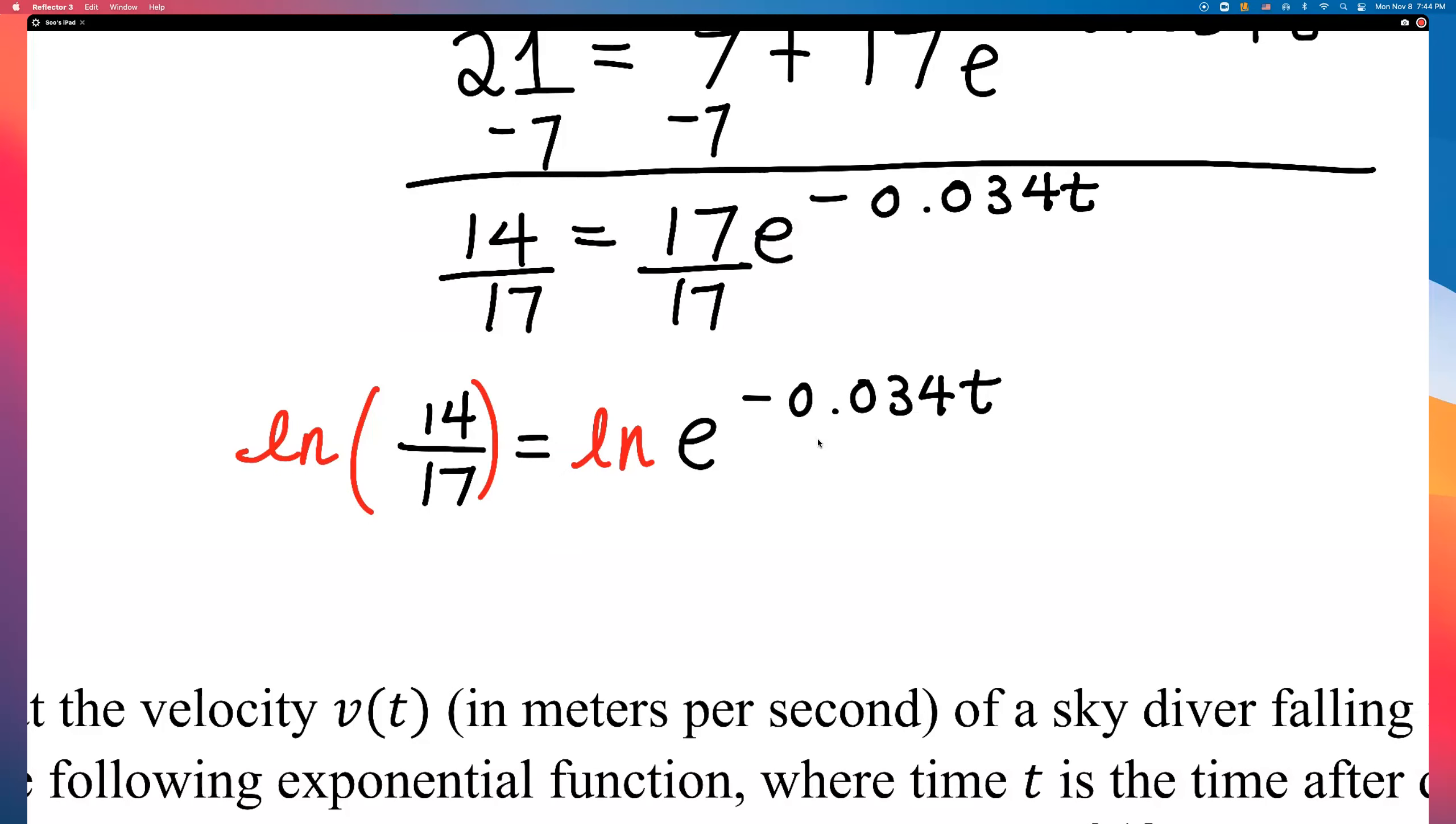Okay. Natural log of both sides. So, the left-hand side is simply natural log of 14 over 17. And the right-hand side, this exponent comes down. And natural log of E will just become 1. So, all we need to do to solve for T is divide both sides by that negative decimal.